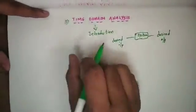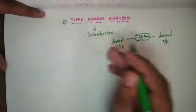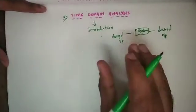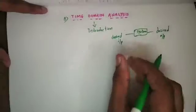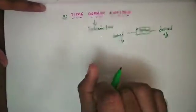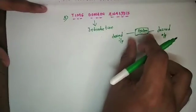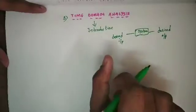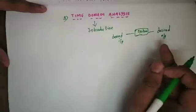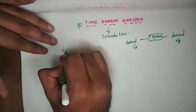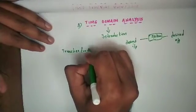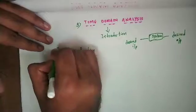We need to change the control system from its real world or physical form into a mathematical form. This system in mathematical form is a mathematical model — our transfer function. What is the transfer function? It is a mathematical model of a system.